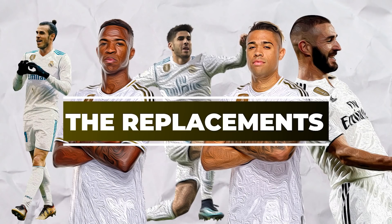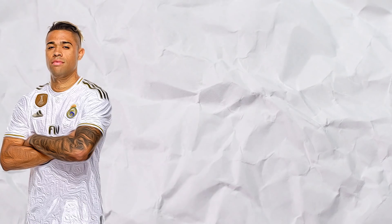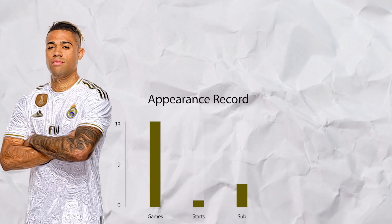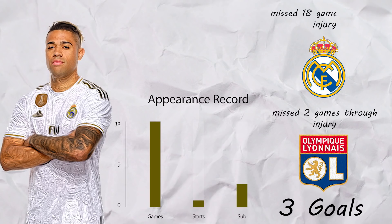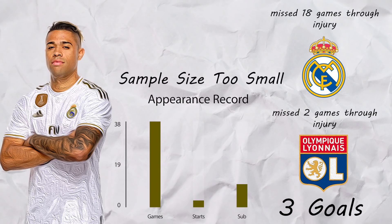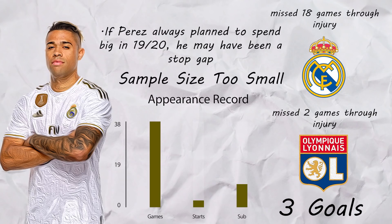But what of the other players who were meant to step up in Ronaldo's absence? Well, Mariano was a strange case — he only played 13 times, of which only 3 were starts, and scored just 3 goals. The reason was an injury record which hampered him throughout the season. At Lyon he missed only 2 matches through injury, but at Madrid that shot up to 18, making him hard to assess due to his small sample size. But with Madrid splashing out this summer, maybe his signing was meant to be a stopgap, and at 21 million he wasn't a big expense and could potentially be sold on for a profit.